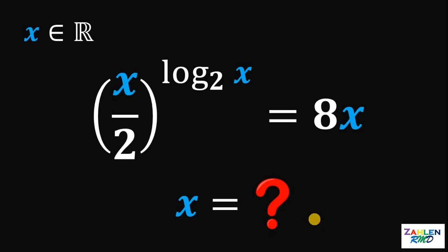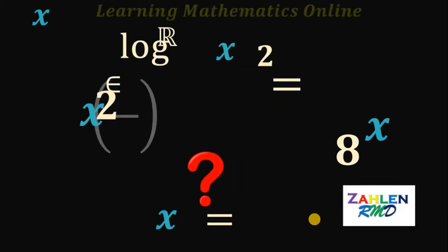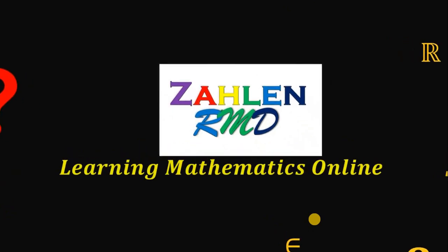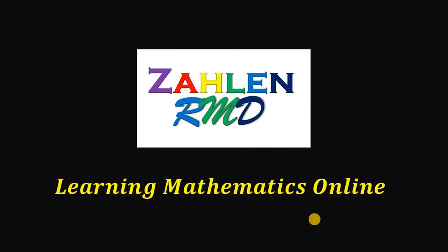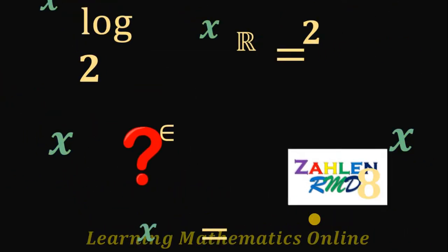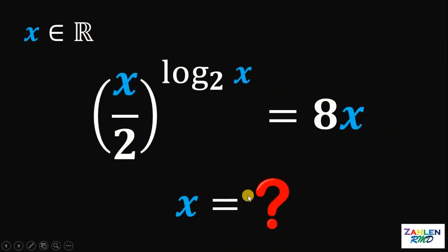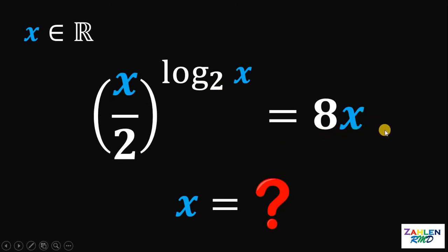Good day everyone. Here's our math challenge for today. Here's our question: solve for the value of x given this equation. We have x over 2 raised to the logarithm of x to the base of 2, equals 8 times x, wherein x is a real number.